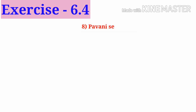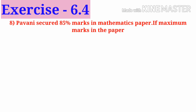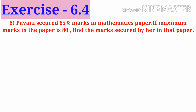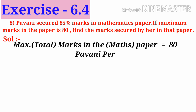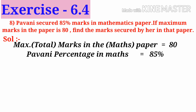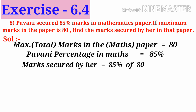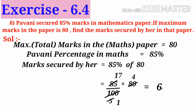Number 8: Pavani secured 85 percent marks in a mathematics paper. If the maximum marks in the paper is 80, find the marks secured by her. Solution: maximum marks is 80, Pavani's percentage in maths is 85 percent. Marks secured by her is equal to 85 percent of 80, that is 85 by 100 into 80. On simplification by 20 and then by 5, we get 68 marks.